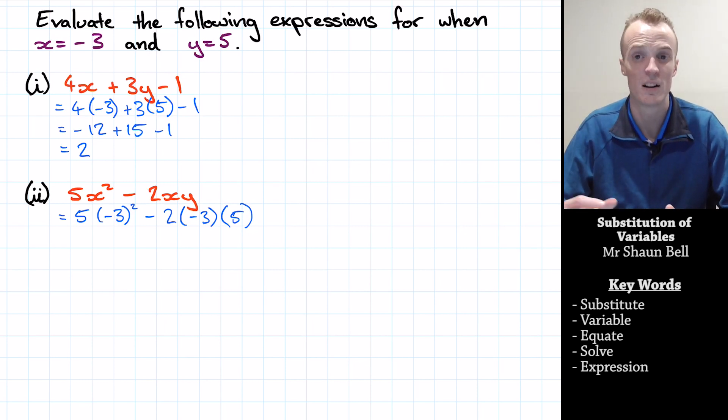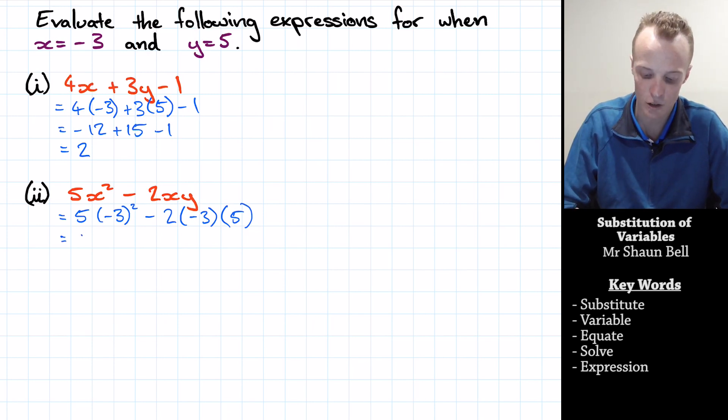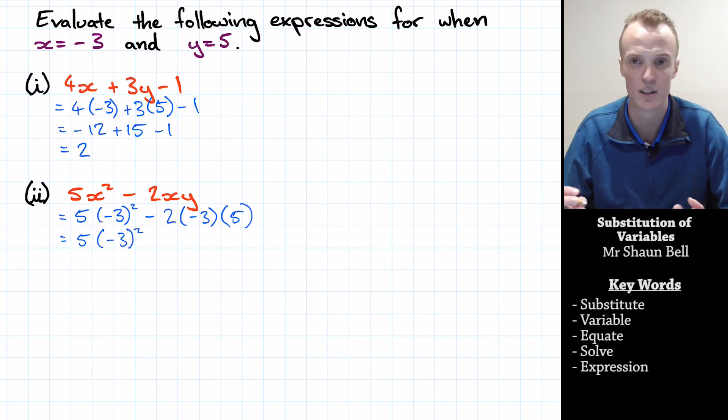The most common mistake that I see people do is forget our BEDMAS rules. Now our BEDMAS rules say we need to evaluate brackets first. Now in our first term, we don't actually have anything inside of our brackets to evaluate. So I'm going to leave that just for the moment. However, in our second term, we've got this negative 2 times negative 3 times 5. So let's evaluate that.